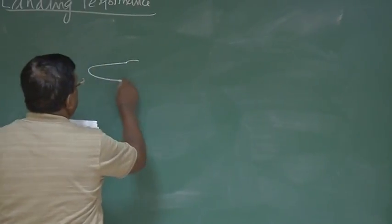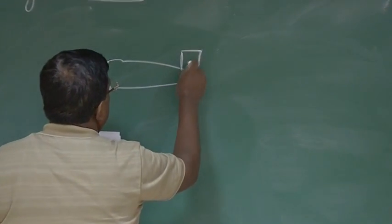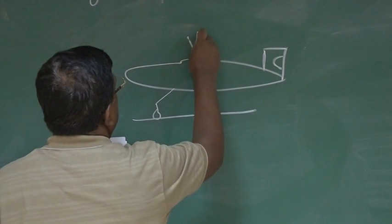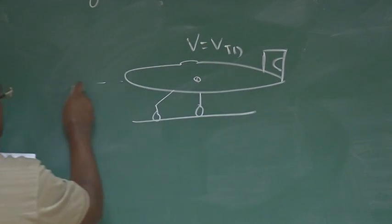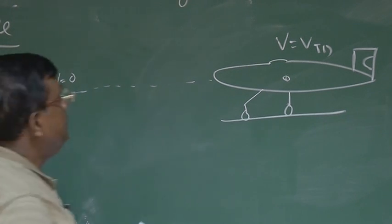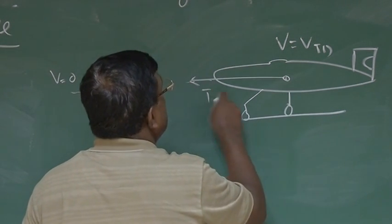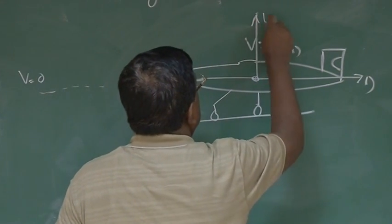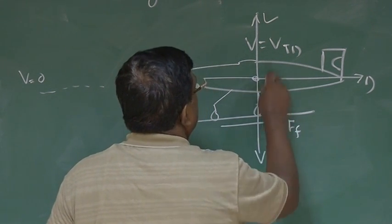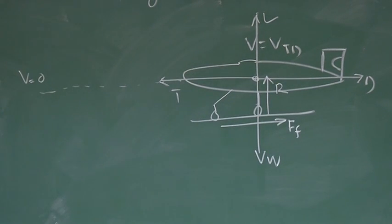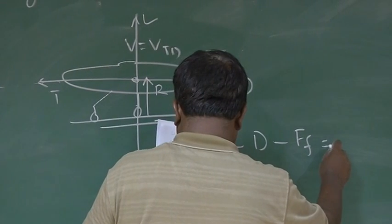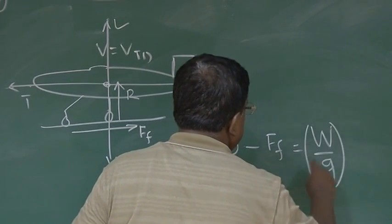So, let us now, as we did for take off case, we try to draw the free body diagram. Aircraft is on the ground, and it is V equal to V touchdown coming down to V equal to 0. We want to find the average deceleration. We know that this is the thrust direction T, this is the drag D, this is the lift L, weight W, and there is a friction F_F. And of course, we write R as a reaction from the earth to the airplane.